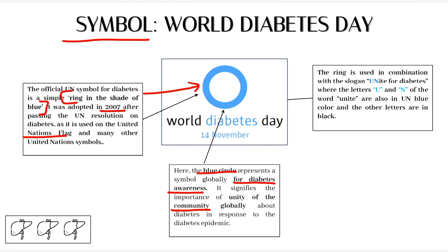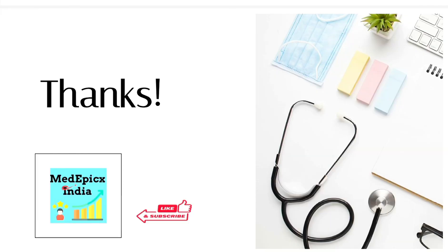The ring is used in combination with the slogan UNITE for diabetes. Here the letters U and N in the word UNITE are written in blue color and the rest of the letters are written in black color. Let us celebrate the occasion of World Diabetes Day by coming together and taking a pledge that we will work towards eradicating diabetes from our lives. Thanks for watching this video.